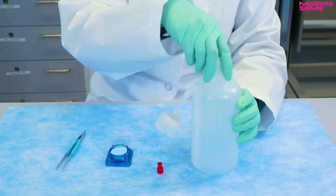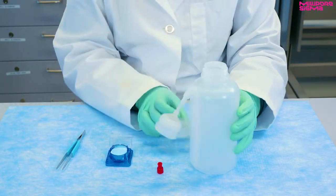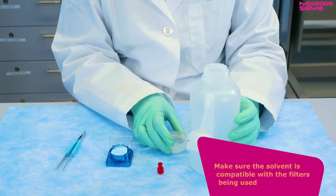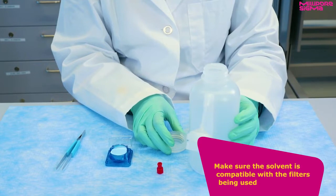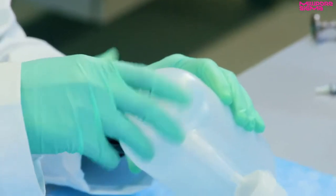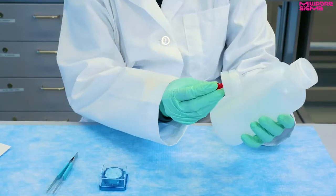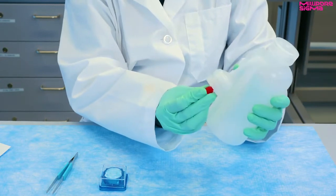Fill the wash bottle with the proper solvent for the hydraulic fluid as recommended by your method. Make sure the solvent is compatible with the filters being used. Replace the wash bottle cap. Insert the spout cap to prevent spillage when storing the wash bottle.